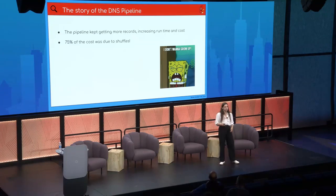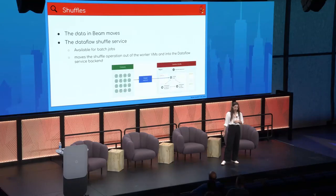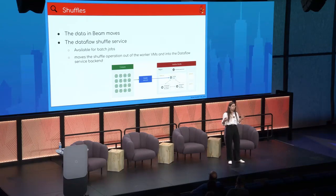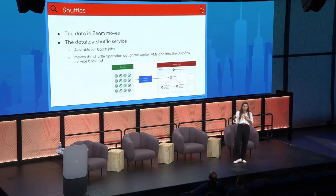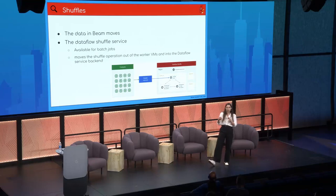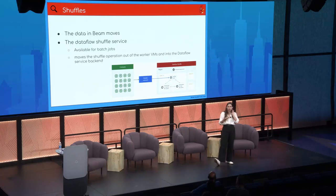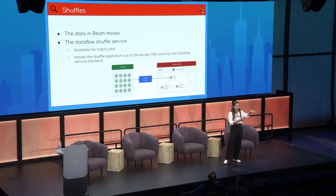Analyzing the issue, we saw that 75% of the cost was due to shuffles. In a nutshell, shuffles involve data that moves between workers. Google has a Dataflow shuffle service that takes some of the work from workers to a backend service. In our case we used the shuffle service, which moves data to that backend, performs operations requiring shuffles, and sends data back to workers. This is what we spent a lot of our money on.